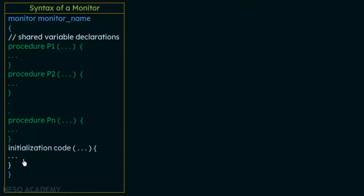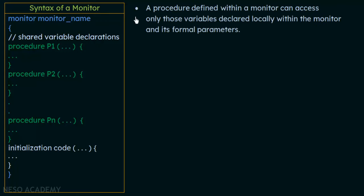In the case of semaphores, a semaphore variable is shared between processes and all processes modify it as needed. But in a monitor, the shared variables are declared inside the monitor and the procedures make changes to them. The shared data is encapsulated within the monitor, like a class, and that is how monitors are designed.